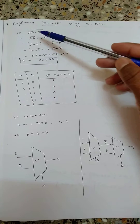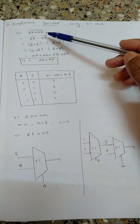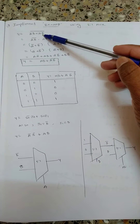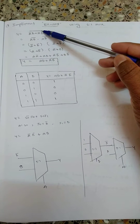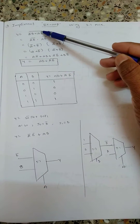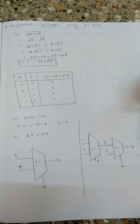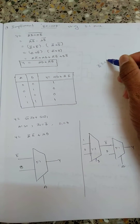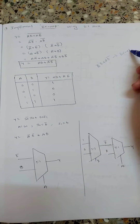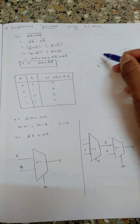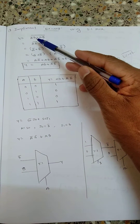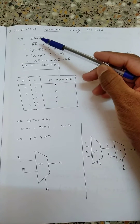We know the XOR equation: A_bar·B + A·B_bar. If I take the complement of XOR I will get XNOR. So I have written Y equal to (A_bar·B + A·B_bar) whole complement.